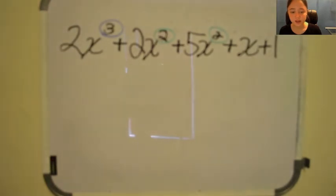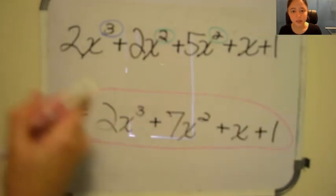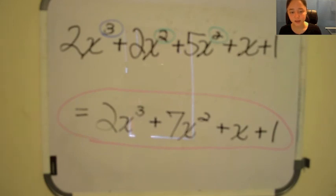In conclusion, your final answer is 2x cubed plus 7x squared plus x plus 1.